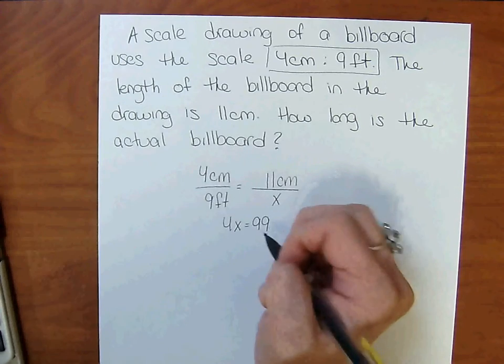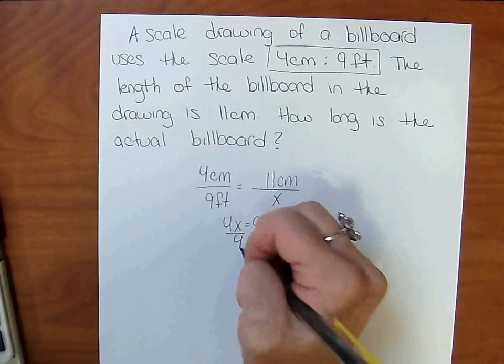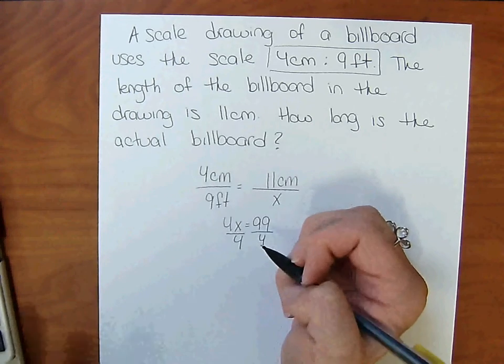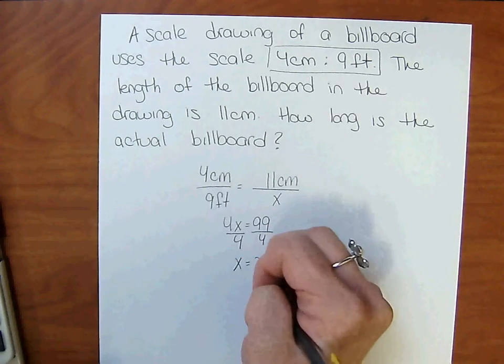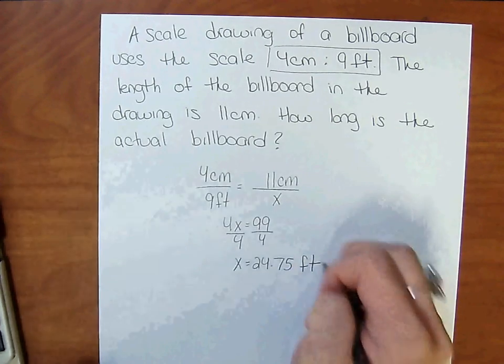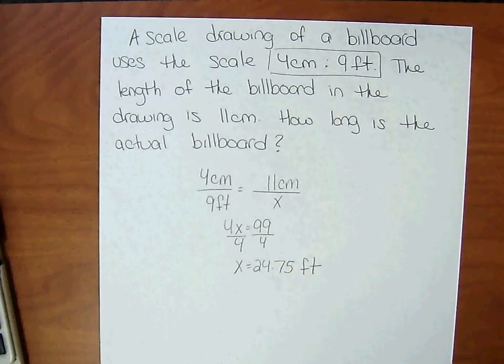Solve for x. Divide 4 on both sides. And x equals 24.75 feet.